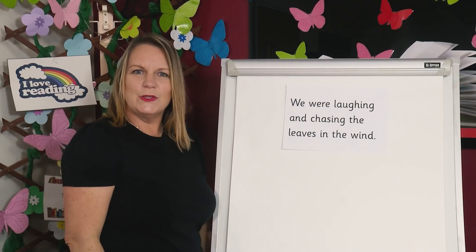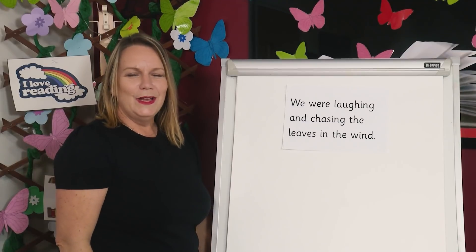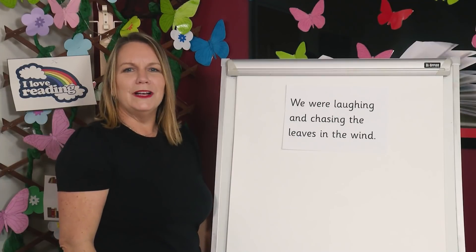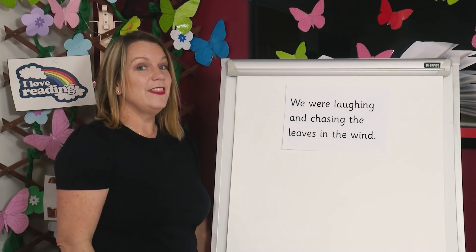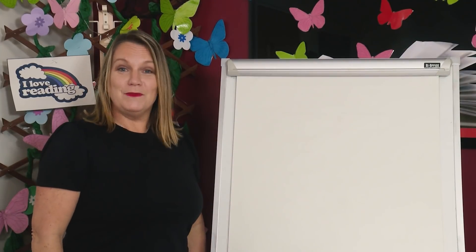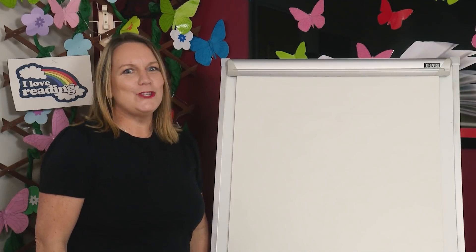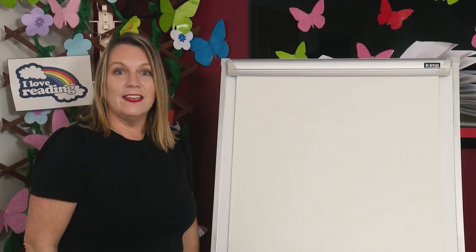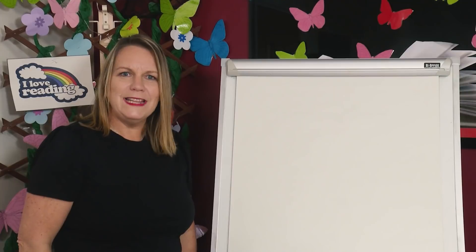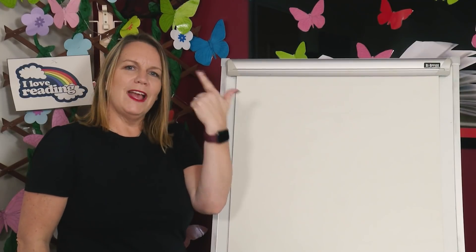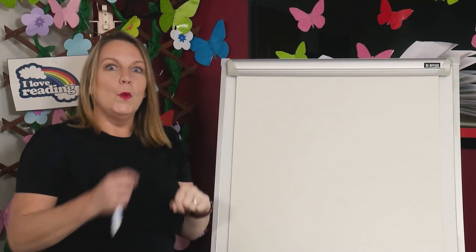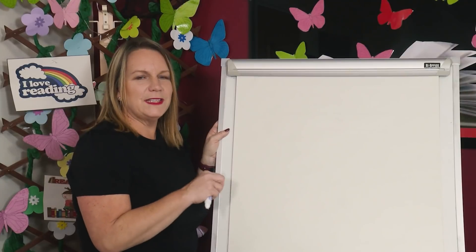We were laughing and chasing the leaves in the wind. It's fun to chase autumn leaves when they fly about in the wind. Wow, you've done so well today. And now let's finish by spelling some words. Because if you can read a word, then you can have a go at spelling it. You will need your paper and something to write with. Let's spell two words with graphemes we already know. Let's spell shaking. Segment the sounds with me. Shaking. Sh-a-k-i-ng. Let's count how many sounds there are — that's five sounds.